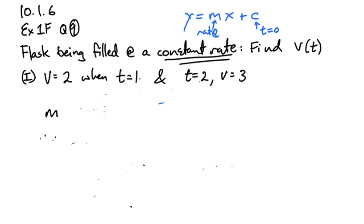So we can find the gradient difference in the volume divided by difference in time. 3 minus 2 over 2 minus 1. So that's a gradient of 1. That 2 minus 1 is a little unclear. Let me just write that again for you. So we've got a gradient of 1. So I know that my volume equals 1 times t plus some sort of constant. How am I going to find that?